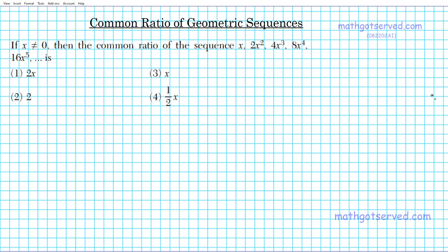To get us started, let's take a look at the formula for the common ratio of a geometric sequence. The common ratio R is given by the second term divided by the first term — a2 divided by a1.